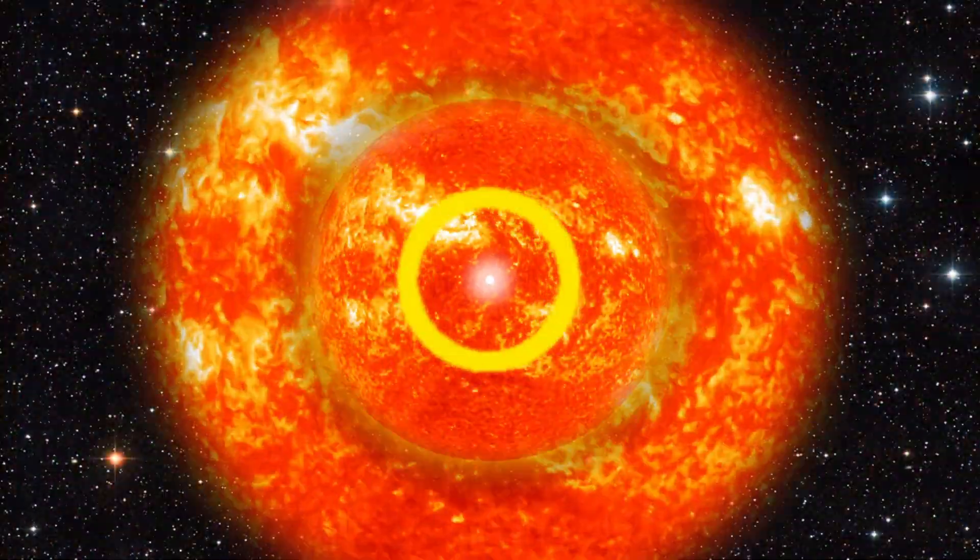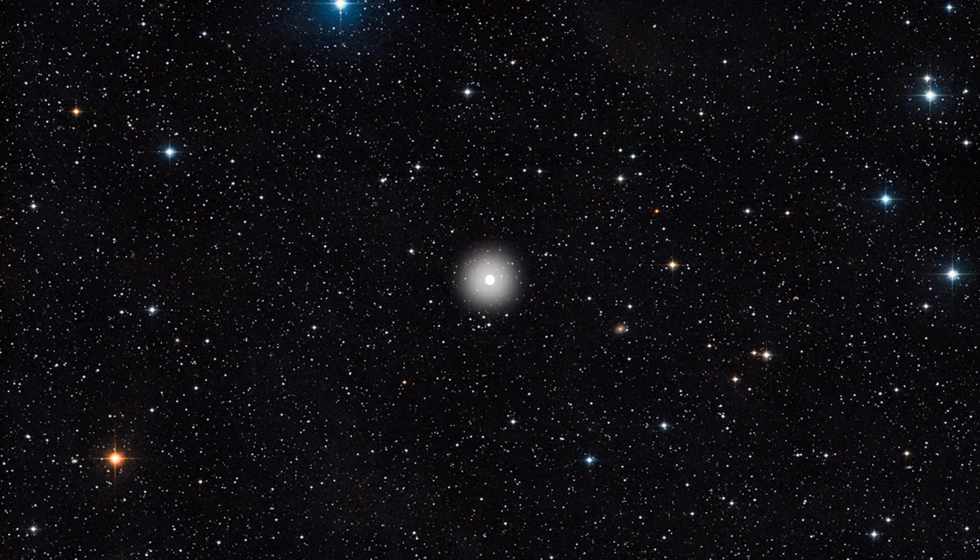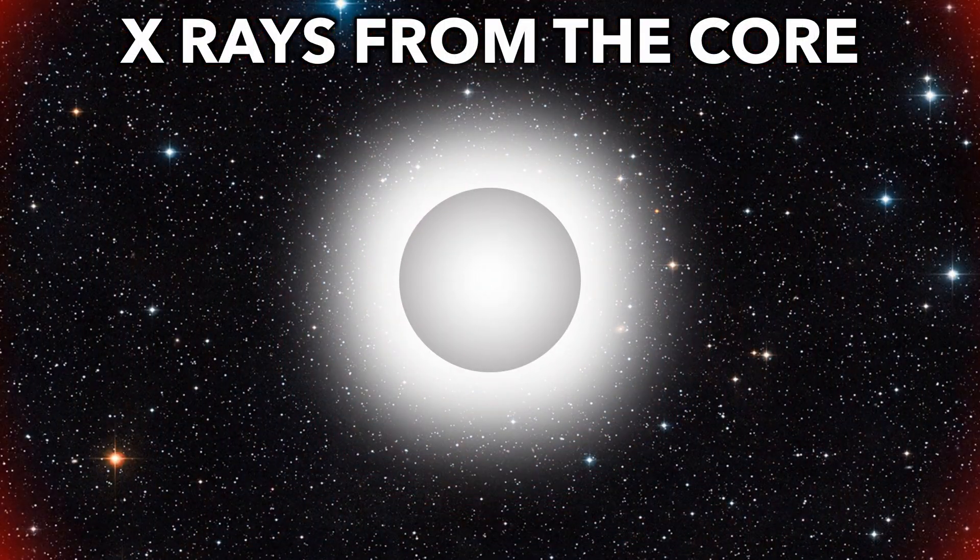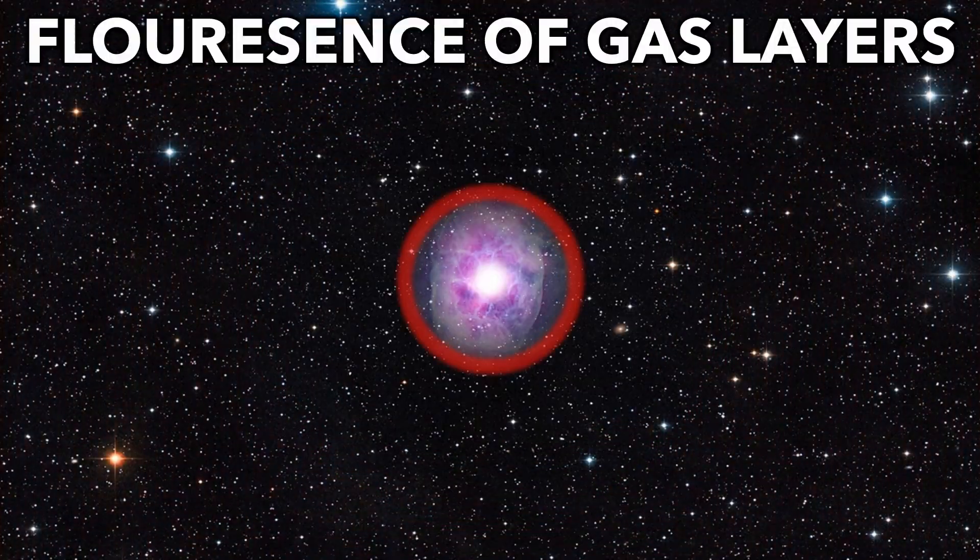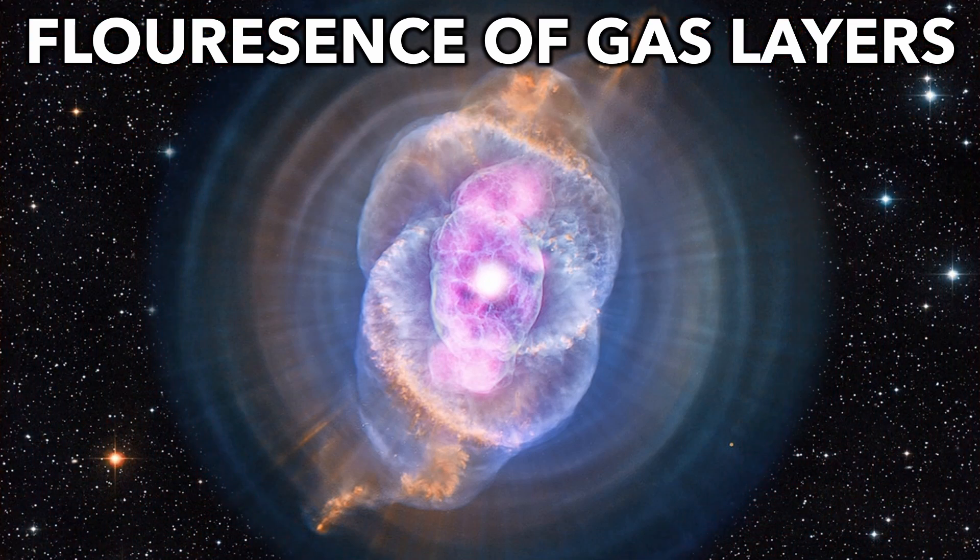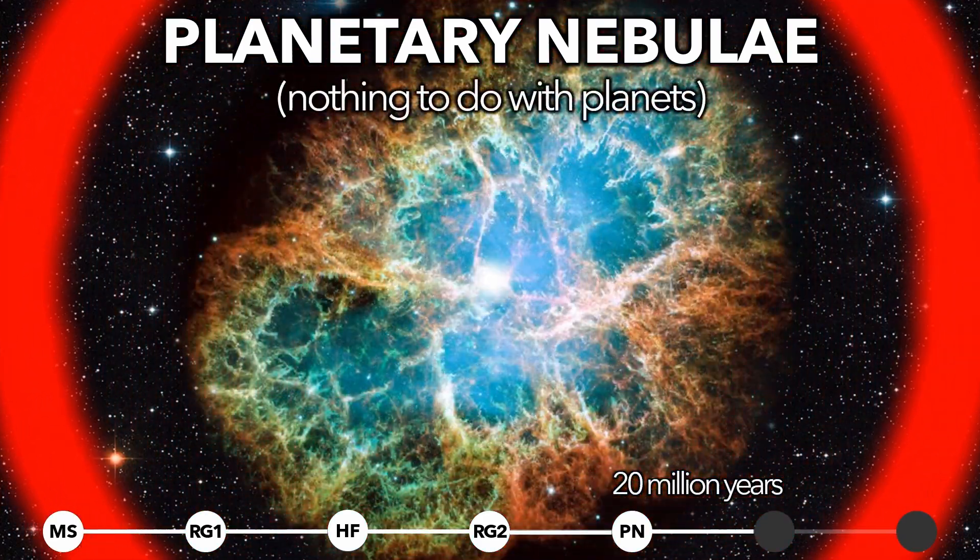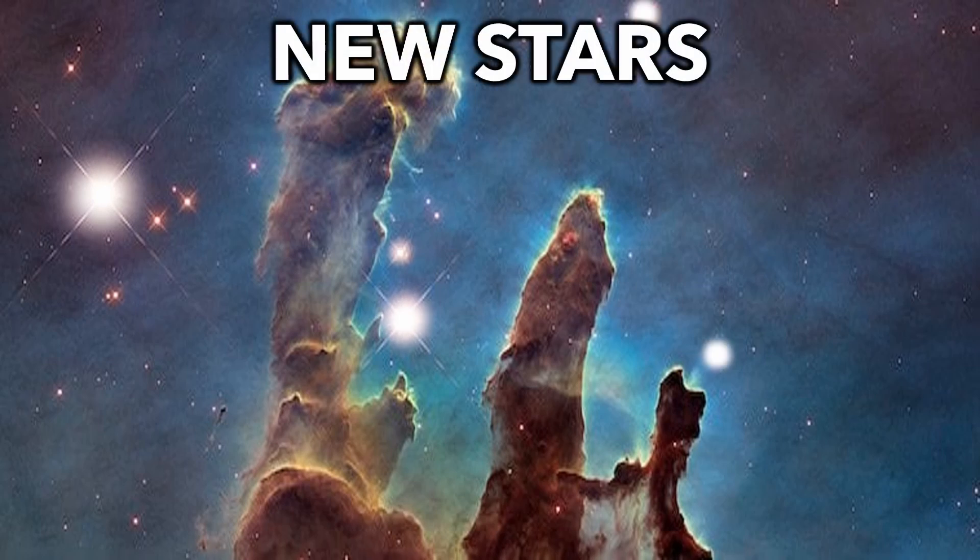The pulses fling the star's gas layers into space, leaving behind the hot, dense core. X-rays from the hot core strike the gas layers, causing them to glow. They are called planetary nebulas, nothing to do with planets, but the gas eventually makes new stars.